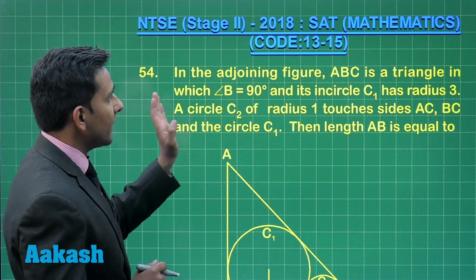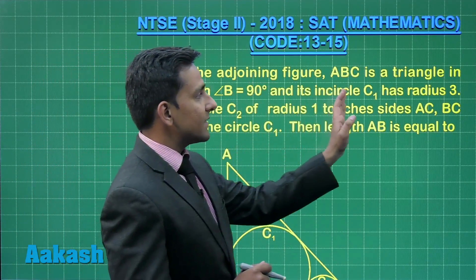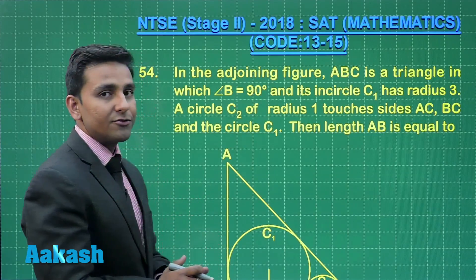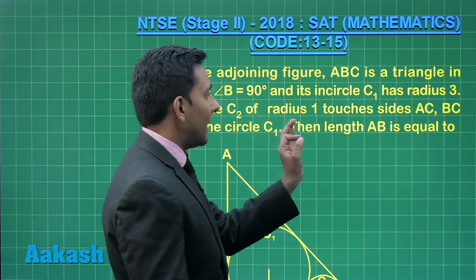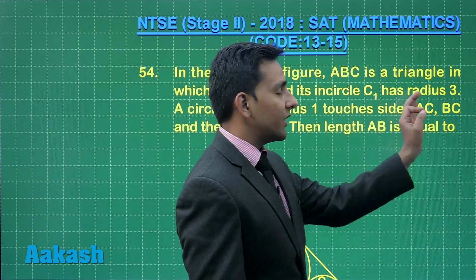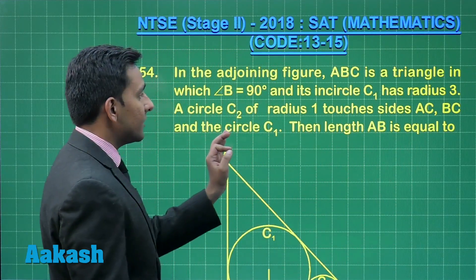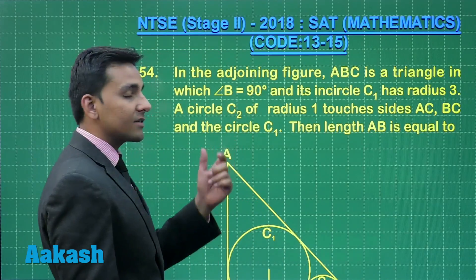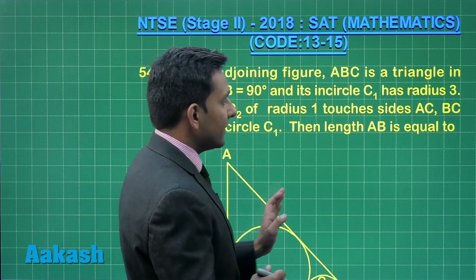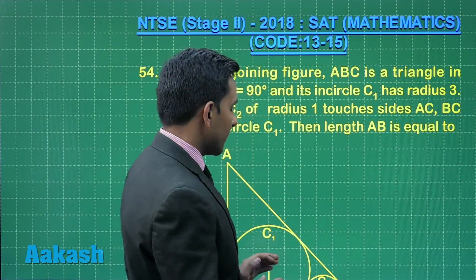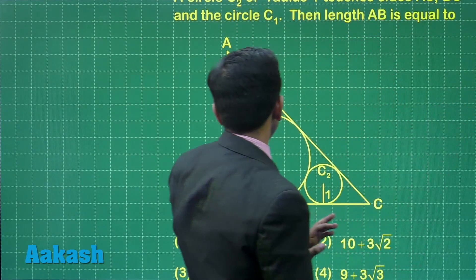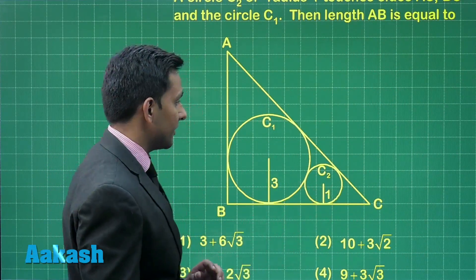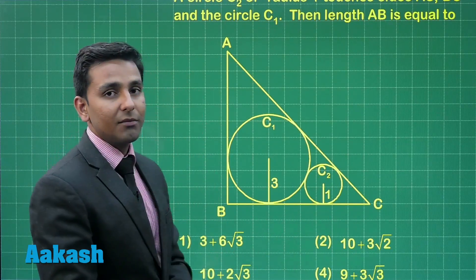Let us take question number 54. In the adjoining figure, ABC is a triangle in which angle B is equal to 90 degrees, meaning the triangle is right-angled at vertex B, and it has an inscribed circle C1 with radius 3. A circle C2 of radius 1 touches sides AC, BC, and the circle C1. We have to find the length of line segment AB.